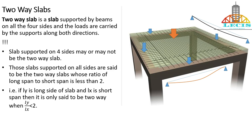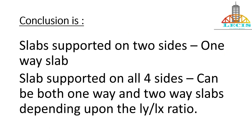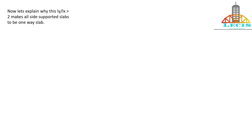That is, it is called a two-way slab when ly divided by lx is less than two. Slabs supported on all four sides remain one-way slabs when ly by lx is greater than two. So the conclusion is: slabs supported on two sides are all one-way slabs, but slabs supported on all four sides can be either one-way or two-way slabs depending upon the ly by lx ratio.